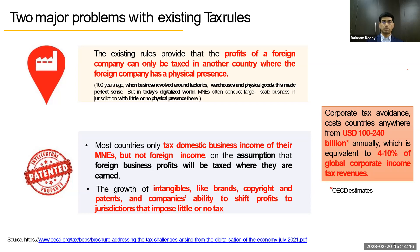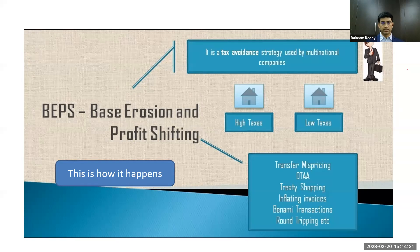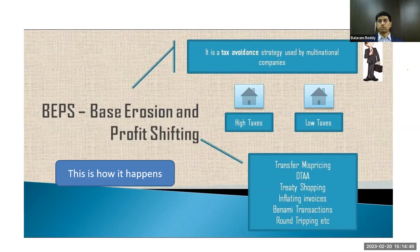These suggestions are called BEPS action plans. The businesses were trying to erase the base of the particular profit they have earned and shift that profit to another place — erasing the base and then shifting the profits to countries where taxes are less or non-existent.